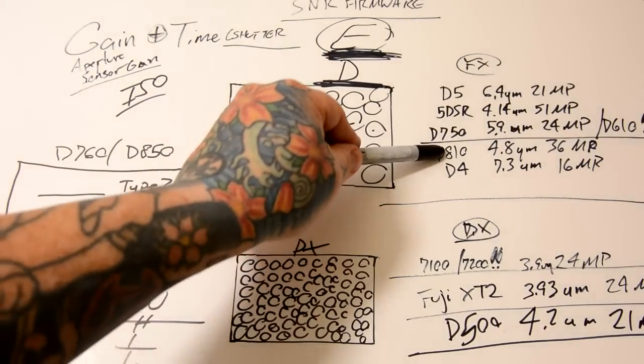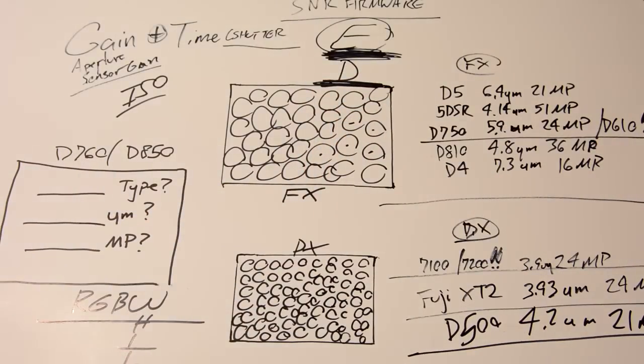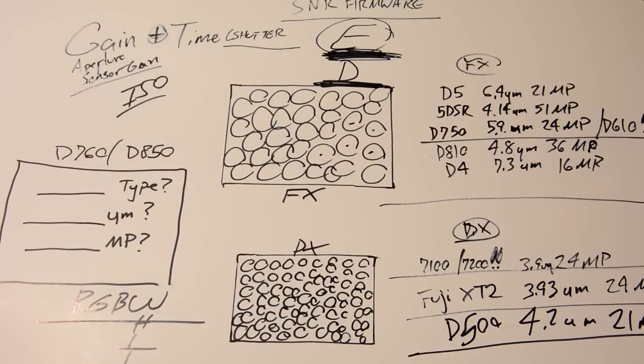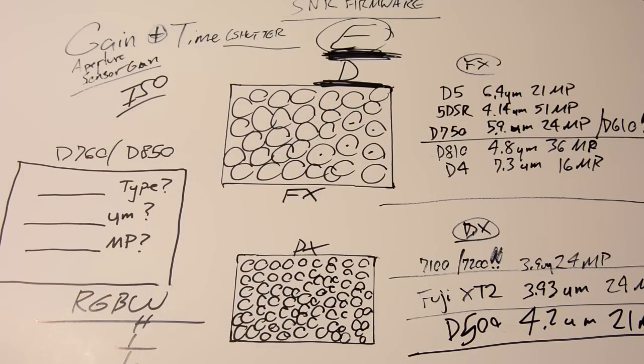No, no, no, no. Nikon D810, 4.8 micrometer pixel pitch at 36-megapixel. While it would have amazing performance, to have it be so amazing that when people see the test shots at crazy high ISOs and go, oh my god, I have to own it, it is going to have to be amazing.